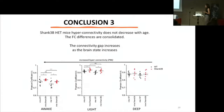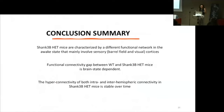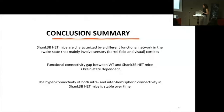These results led us to conclude that shank3b heterozygous mice hyperconnectivity does not decrease with age — it is stable — and the functional connectivity differences are consolidated at P90. Moreover, as for P45, the connectivity gap increases as brain-state complexity increases.